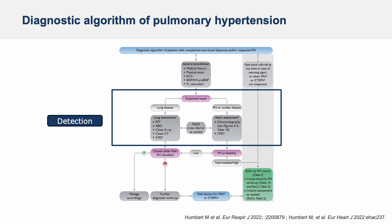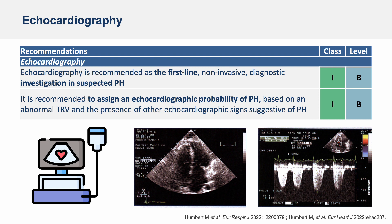The second step of the algorithm is detection, based on heart assessment and also lung assessment. The minimal evaluation should include echocardiography among other things. So in case of pulmonary hypertension suspicion based on symptoms and clinical signs, which are not specific to the disease, it is recommended to perform an echocardiography, which is the first-line non-invasive diagnostic investigation tool.